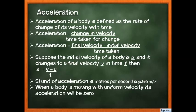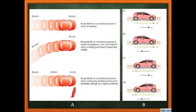Here are a few examples. In the first figure, a car starts at 30 km/h and reaches 60 km/h. We say this car is accelerating because its velocity is increasing.